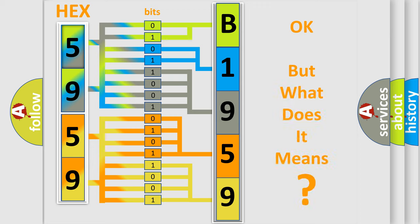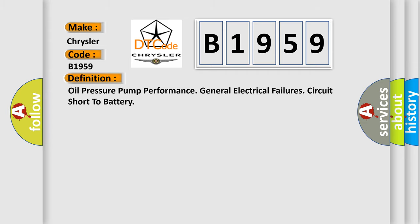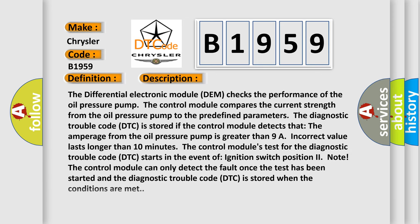We now know in what way the diagnostic tool translates the received information into a more comprehensible format. The number itself does not make sense to us if we cannot assign information about what it actually expresses. So, what does the Diagnostic Trouble Code B1959 interpret specifically for Chrysler car manufacturers? The basic definition is: Oil pressure pump performance — general electrical failure, circuit short to battery. The differential electronic module (DEM) checks the performance of the oil pressure pump.